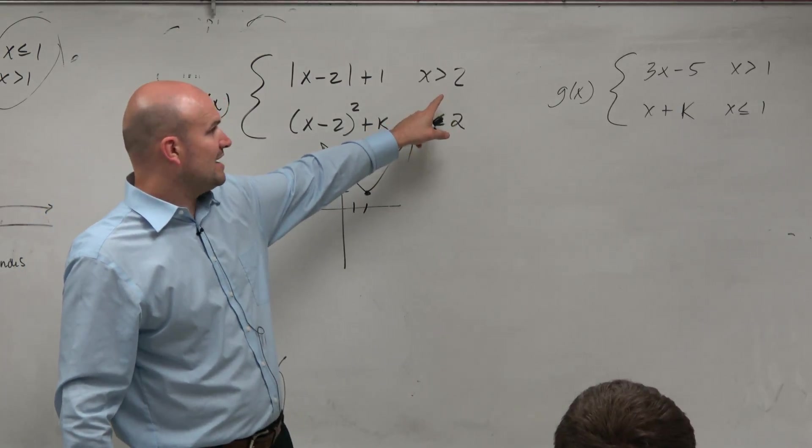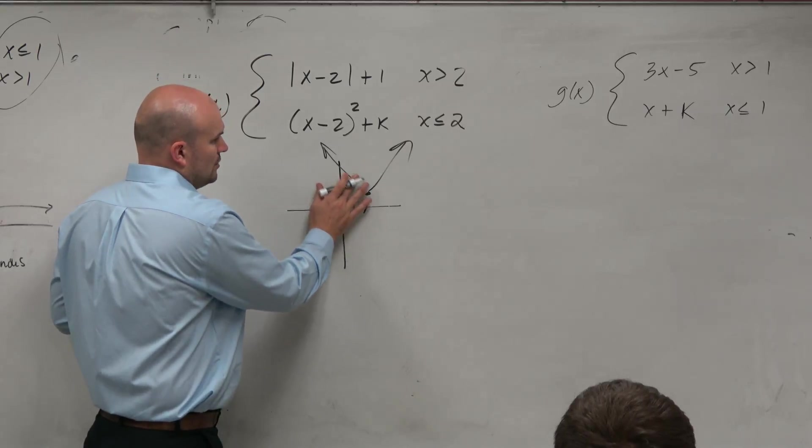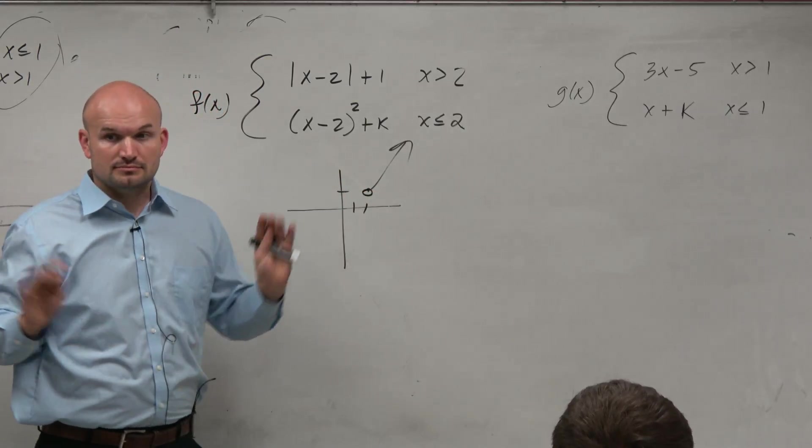Now it only says, only graph this for values that are greater than 0. So erase that, put a nice hole. Follow?